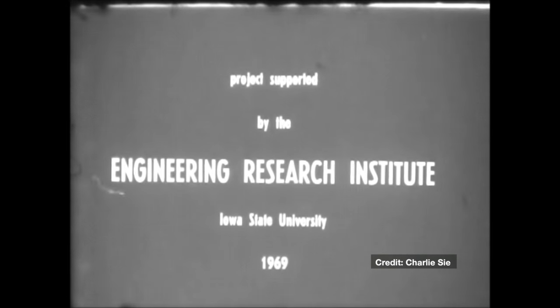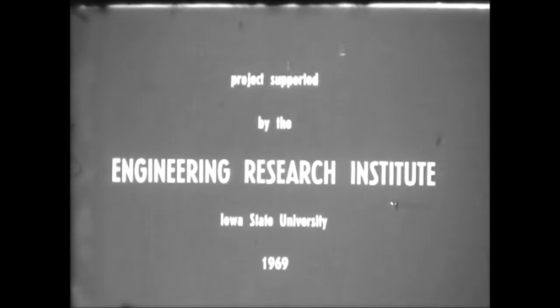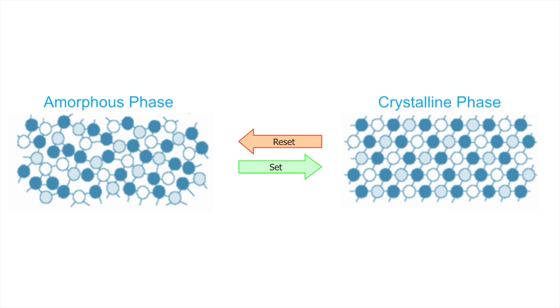PCM started in the late 1960s from a person called Stanford Ovshinsky. He came up with the main concept, observing that some materials can switch their phase between crystalline and amorphous states.